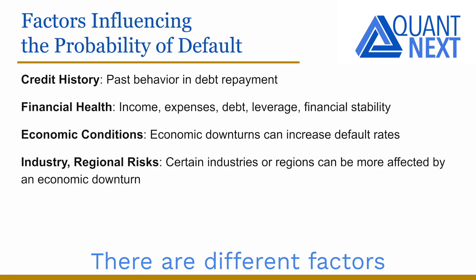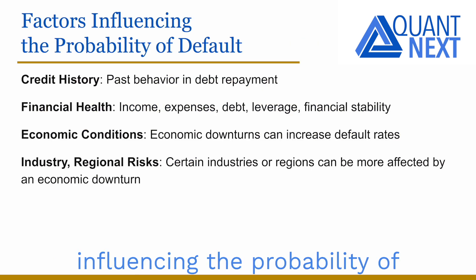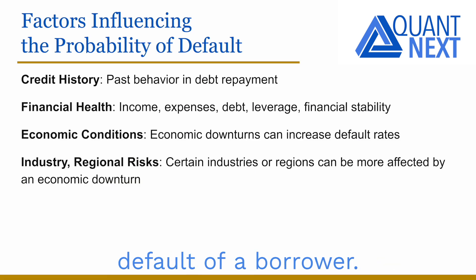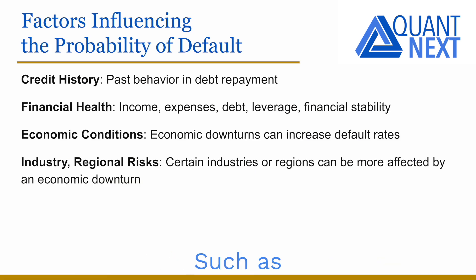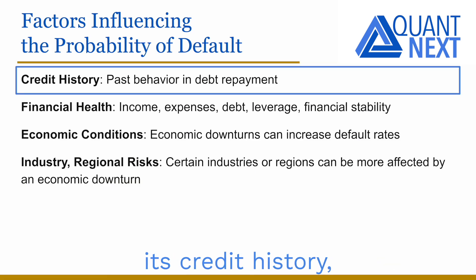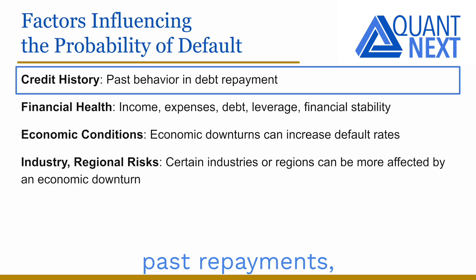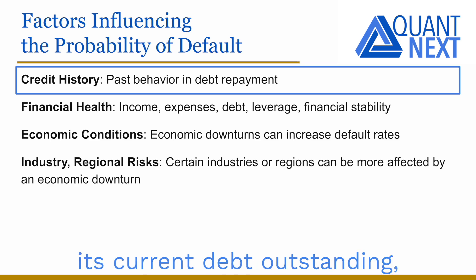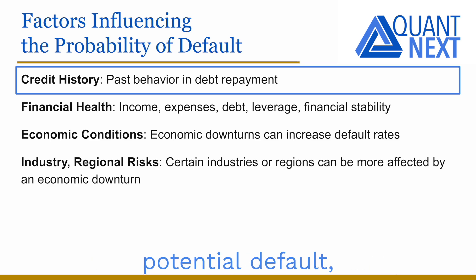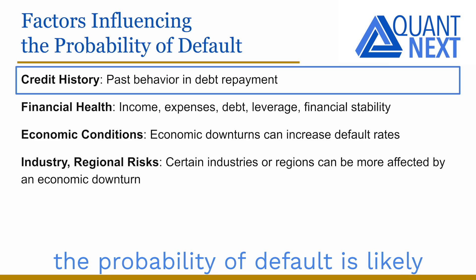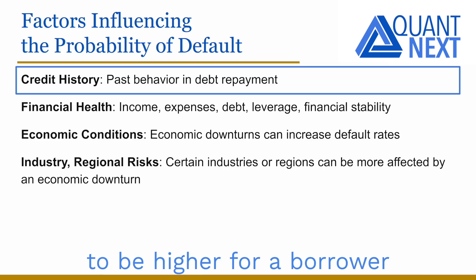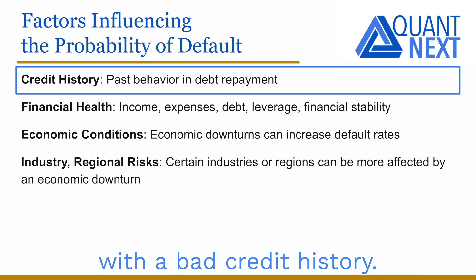There are different factors influencing the probability of default of a borrower, such as its credit history, which includes past repayments, its current debt outstanding, and potential defaults. The probability of default is likely to be higher for a borrower with a bad credit history.